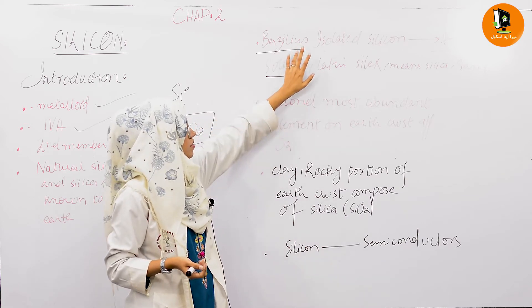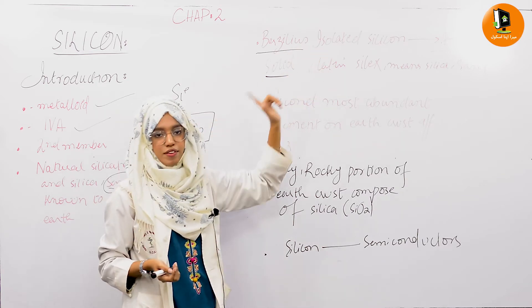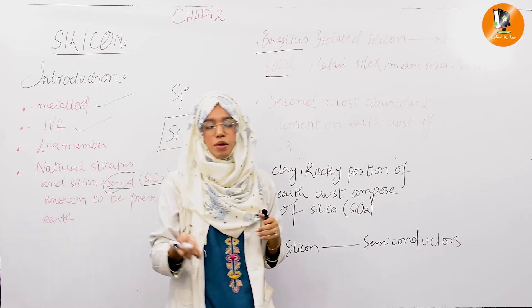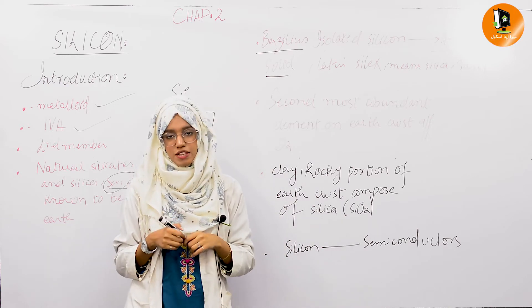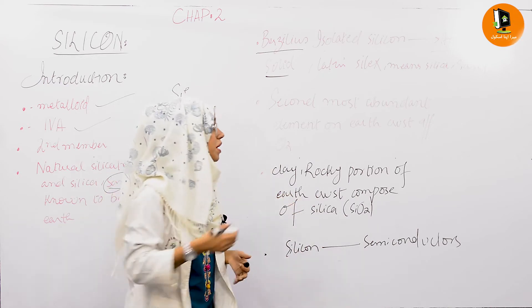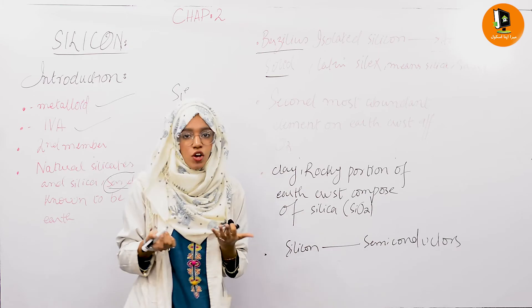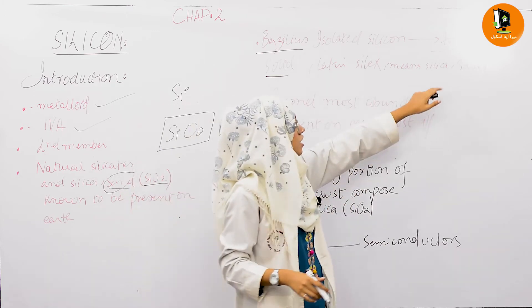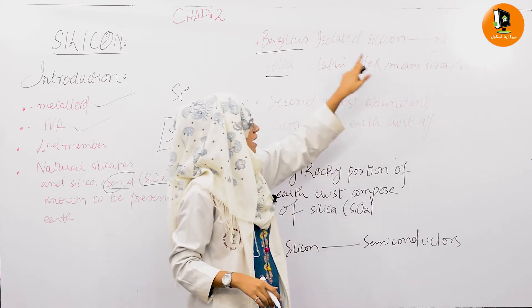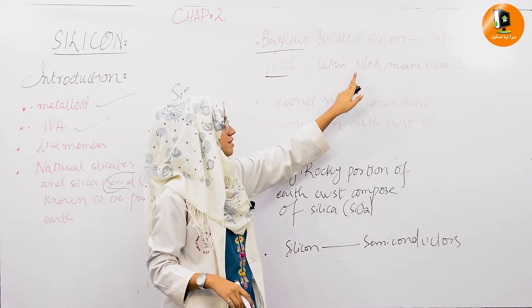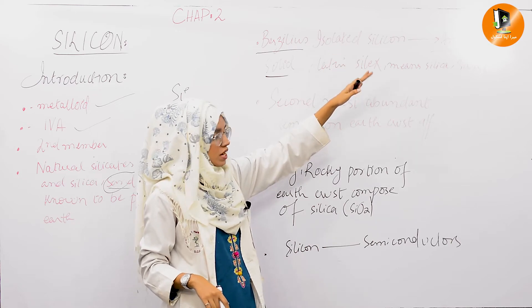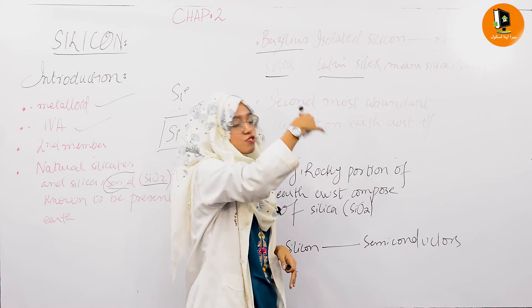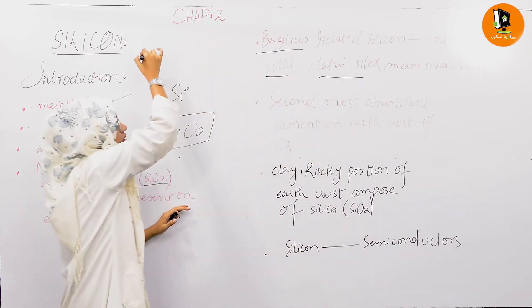Berzelius isolated silicon in its amorphous form. The name 'silicon' was given because when its appearance was observed, it looked sand-like — resembling silica. The Latin term for sand or silica is 'silics,' and so the name silicon comes from the Latin word 'silics,' meaning sand or silica. That is how this element was named silicon.